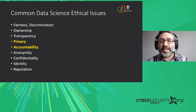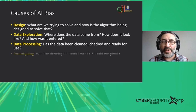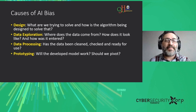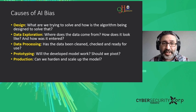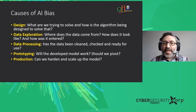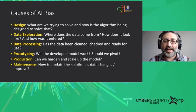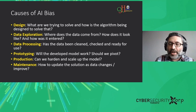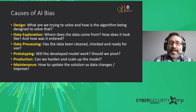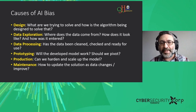The main causes of bias are the design — how we make solutions work, what type of access they give to whom. Also data exploration: where does the data come from, is it accurate, how was it entered? Data processing: how was it cleaned, is it ready for use, is it cleaned from biases? Prototyping: how do we develop the model, does it work, should we pivot? Production: can we harden and scale up the model from a security or privacy point of view? And maintenance: once deployed, data keeps growing and the analysis grows, so how do we maintain that?